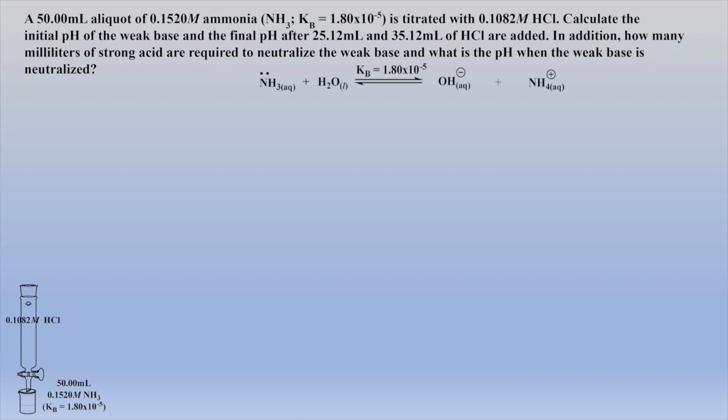So let's calculate the pH before any acid is added. The first step is to write out the weak base equilibrium, and it's a good idea to always write the Kb over the equilibrium arrows. The small Kb value indicates the base is weak. Understanding base strength is simply examining the stability of the conjugate acid — the more stable the conjugate acid, the stronger the base.